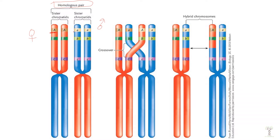then we will have a skin color allele on the other chromosome as well. They could be the same or they could be different. When chromosomes replicate, then they are sister chromatids.